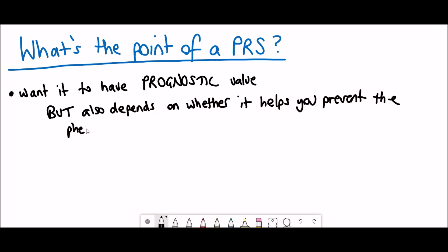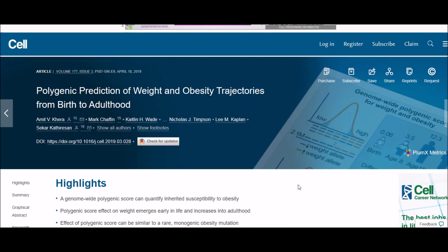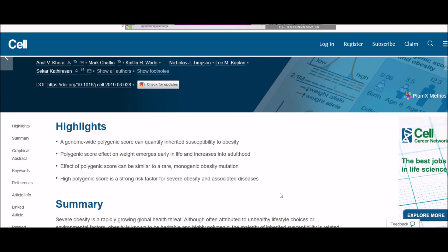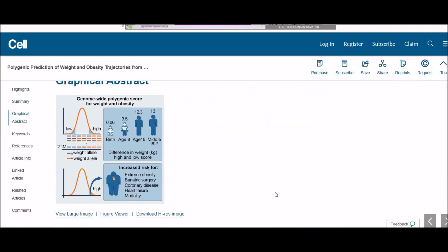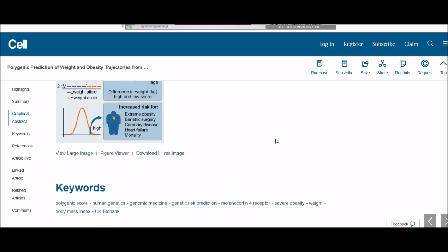This was actually already done in a recent paper whereby they used the genome-wide polygenic risk score to quantify the inherited susceptibility to obesity. They did this to see if they could identify adults at risk of severe obesity. The idea is that if you can, then you can try and help to prevent that from happening.